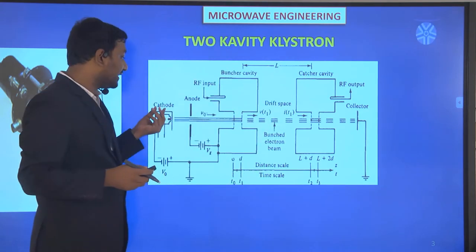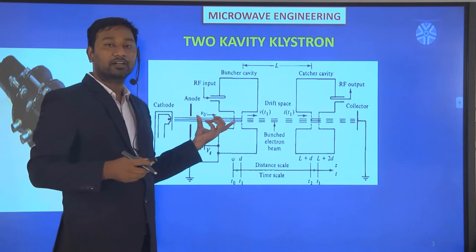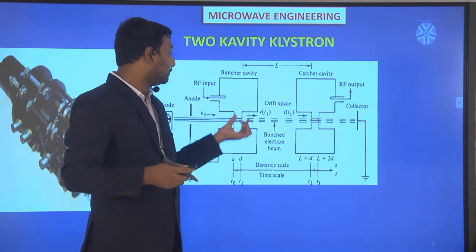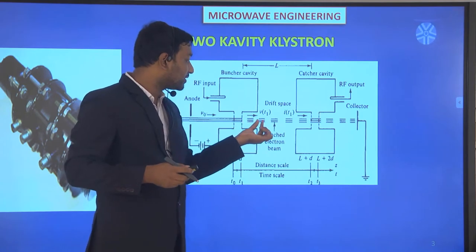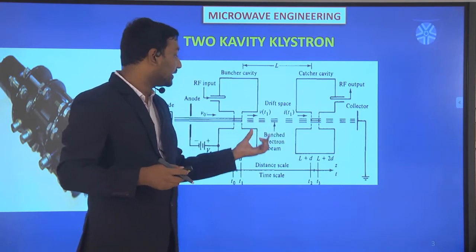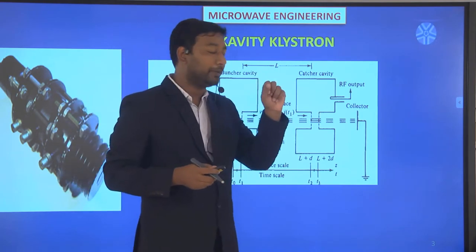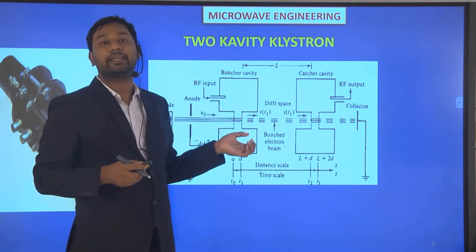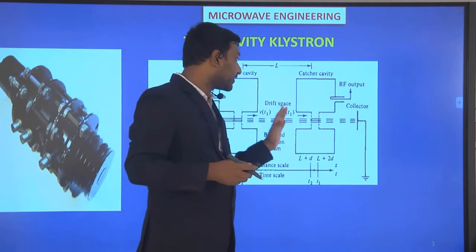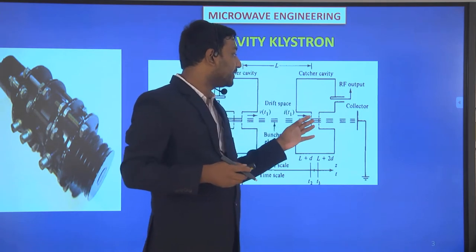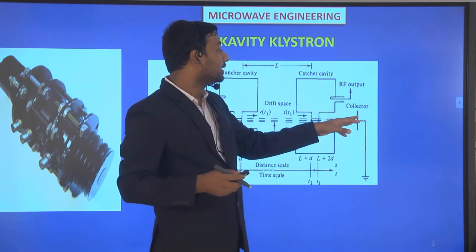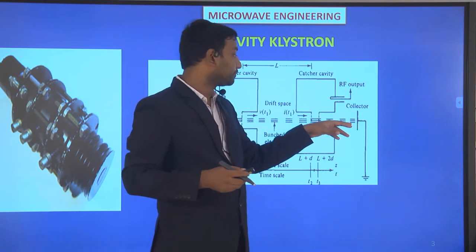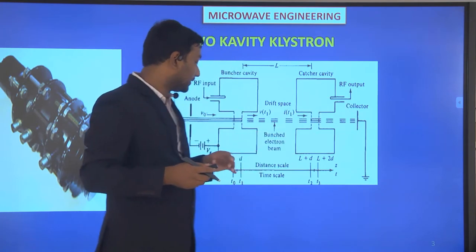The cathode emits some electron beams. Whenever those electron beams pass through the buncher cavity, all the electron beams are bunched together — that is called the bunched electron beam, and that is the effect of velocity modulation. After that, those electron beams pass through the catcher cavity and the RF output is collected using a coupling mechanism.